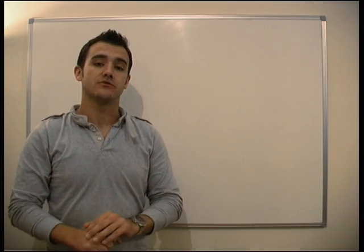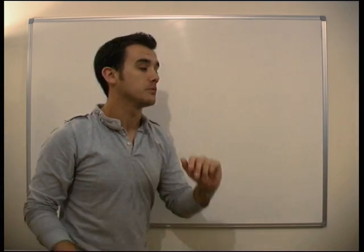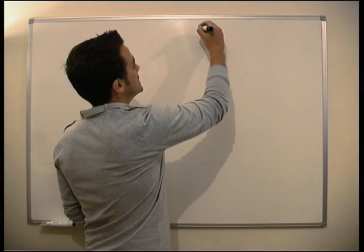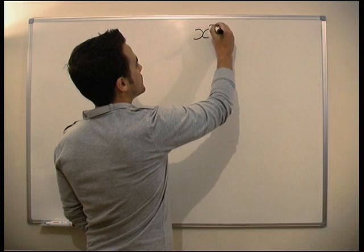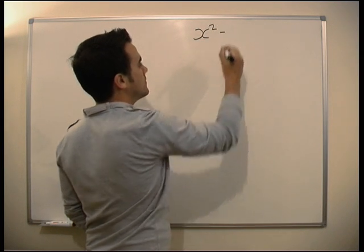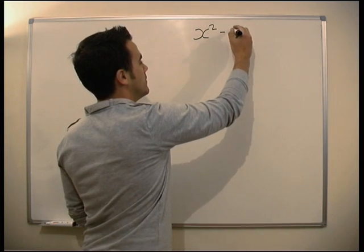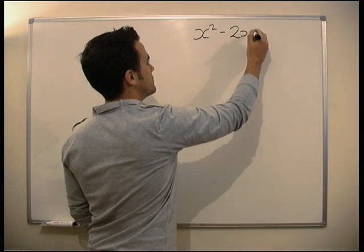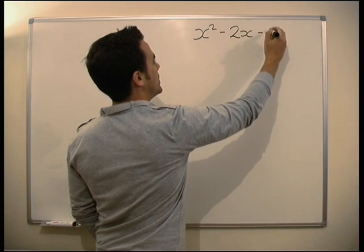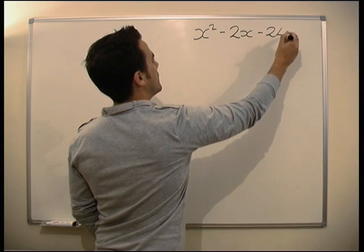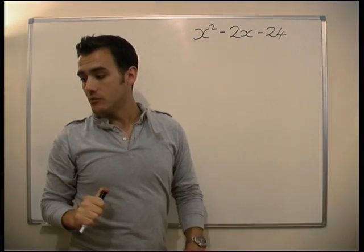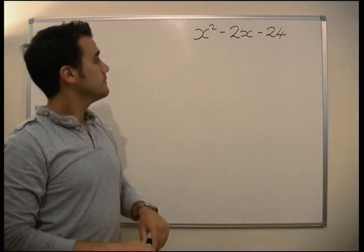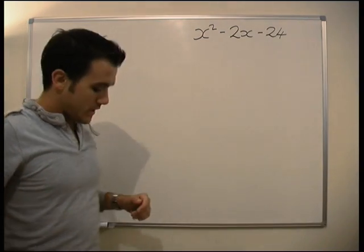Okay, so now we're going to look at factorizing a quadratic equation. We're given the quadratic equation x squared minus 2x minus 24, so we're not getting easy to start with.